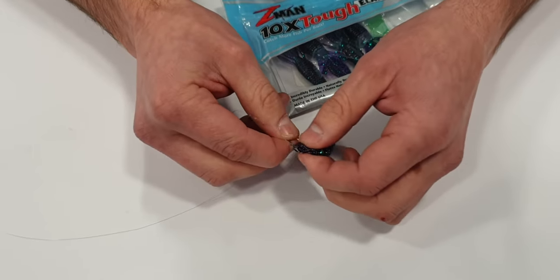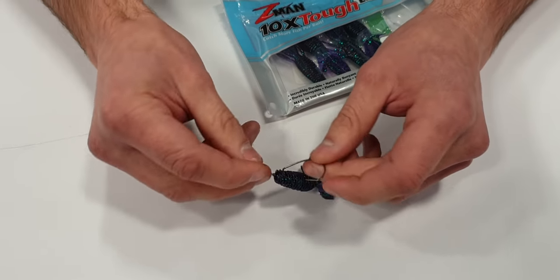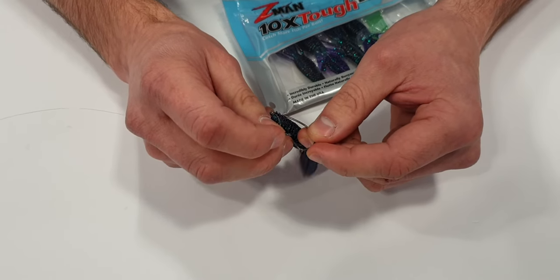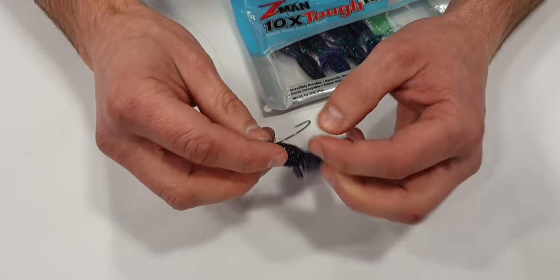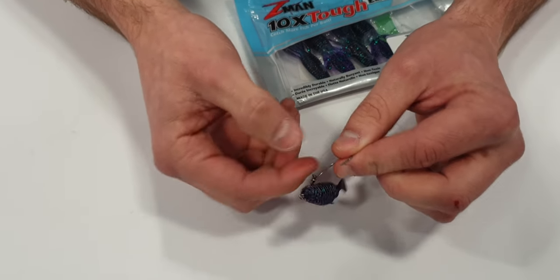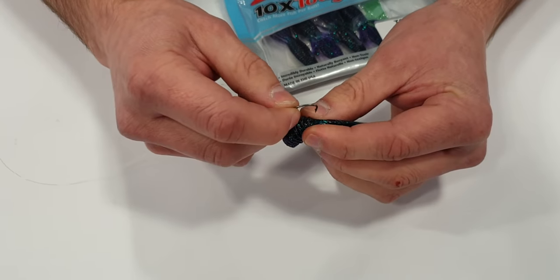Then what you do is just unhook the hook from the back of the lure, pass it through the other end of your swivel, then bring that around and hook the lure back on.